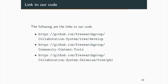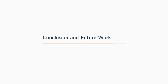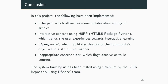These are the links to our code for reference. In this project, we implemented Etherpad which allows real-time collaborative editing of articles. We integrated interactive content using H5PP, which paves the path for user experiences towards interactive learning. Django Wiki facilitates describing the community's objectives in a structured manner as a wiki page. Finally, the inappropriate content filter prevents or flags abusive or toxic content and maintains the integrity of the system.